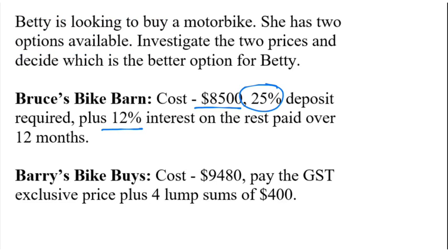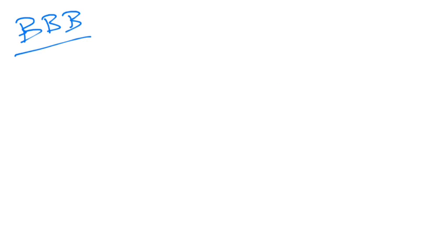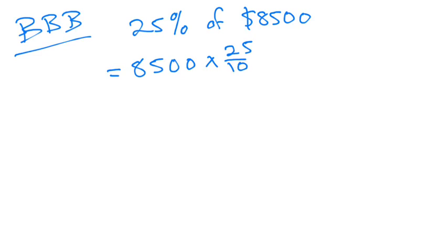So Bruce's Bike Barn. She is going to, it's $8,500 and she's going to pay a 25% deposit. So 25% of $8,500. Let's work that out. So that'll be $8,500 times. Now you could do that as 25 over 100 or you could also do it as times one quarter.